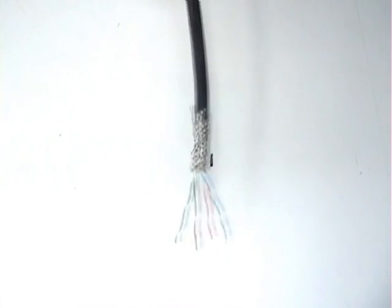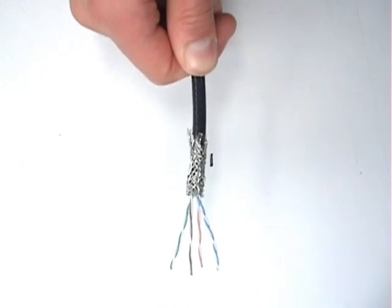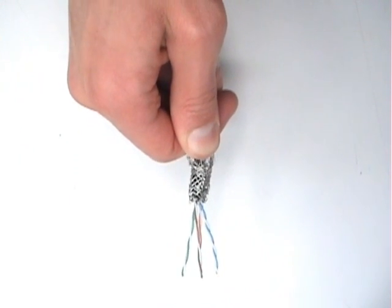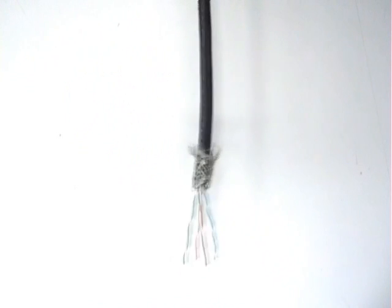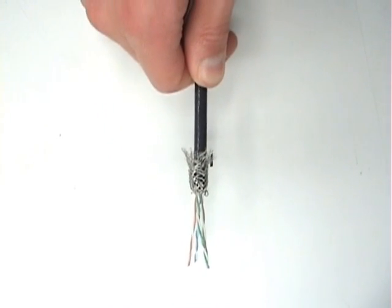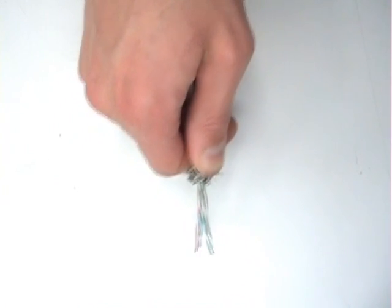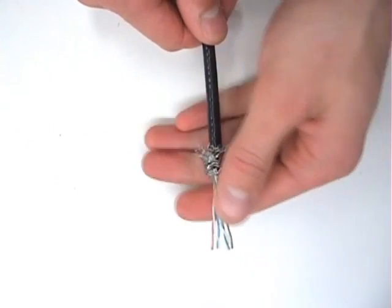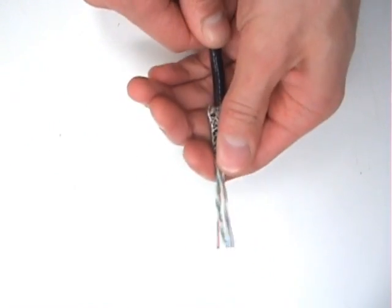And next, stretch the jacket back up into the braid. Using one hand to hold the jacket and the other hand to stretch the jacket. And once the stretching of the jacket is complete, reorganize the braid.